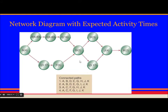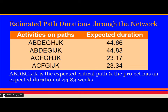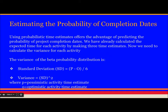Just put the expected number of weeks as the duration in the activity node. Then write down the connected paths and add those number of weeks on each connected path. The highest number gives you the critical path. The expected path duration for the critical path becomes 44.83 weeks. This is the PERT estimate.